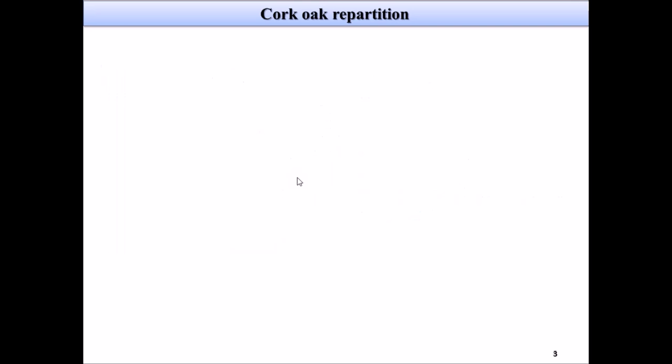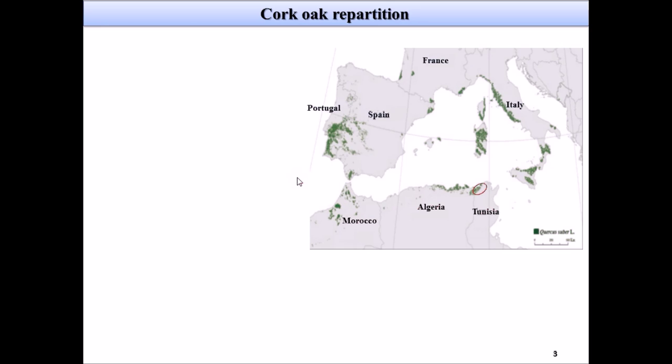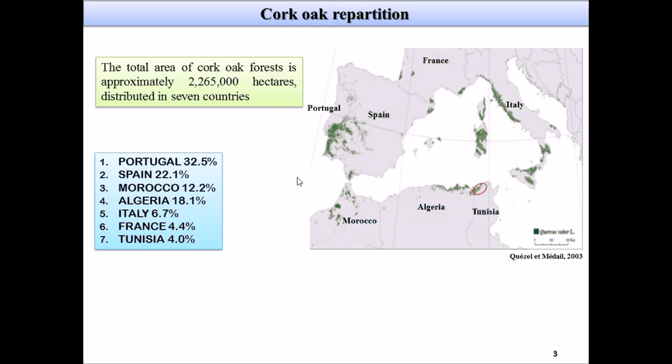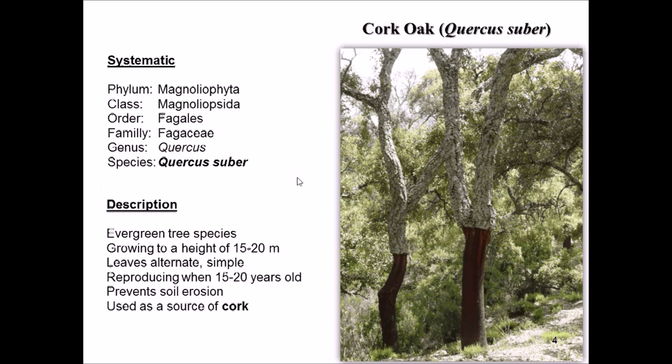Cork oak is a tree distributed in only seven countries: Portugal, Spain, Morocco, Algeria, Italy, France, and Tunisia. It's a very important tree belonging to the family Fagaceae, also named Quercus suber. It's an evergreen tree species with several important aspects.